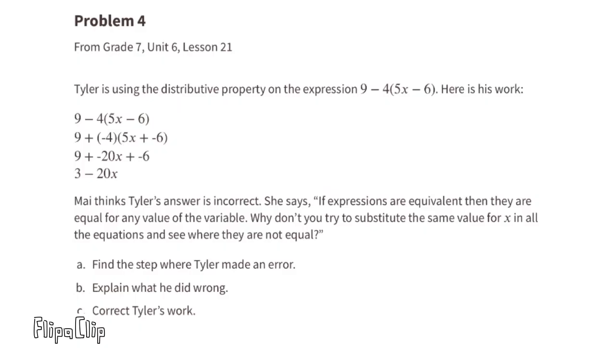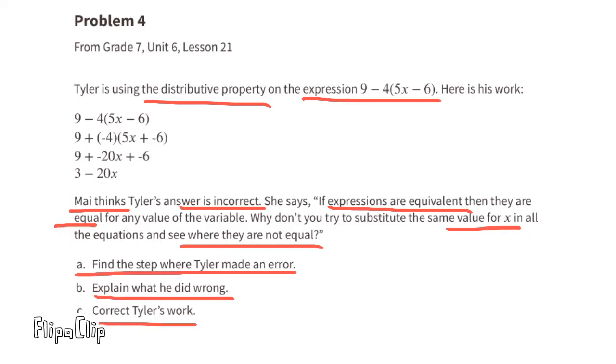Problem number 4. From 7th grade, Unit 6, Lesson 21. Tyler is using the distributive property on the expression 9 minus 4 times 5x minus 6. Here is his work. Mai thinks Tyler's answer is incorrect. She says, if expressions are equivalent, then they are equal for any value of the variable. Why don't you try to substitute the same value for x in all the equations, and see where they are not equal. A. Find the step where Tyler made an error. B. Explain what he did wrong. And C. Correct Tyler's work.